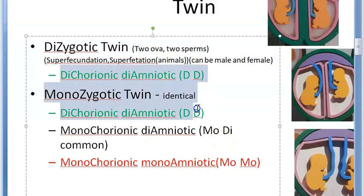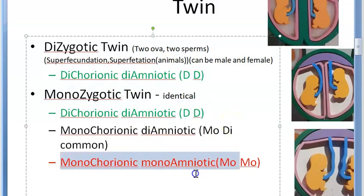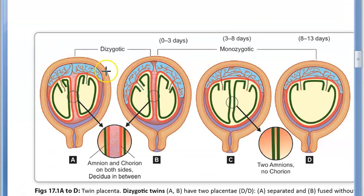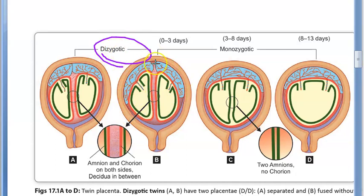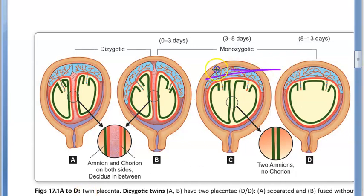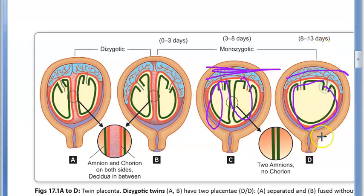In summary: DD twins (dichorionic diamniotic) are favorable; MoMo twins are high risk — conjoined twins can occur — so these are flagged as concerning. Looking at photos: two placentas and two amniotic sacs indicate DD twins; a single placenta with two amniotic sacs indicates MoDi twins; a single placenta with a single amniotic sac indicates MoMo twins.